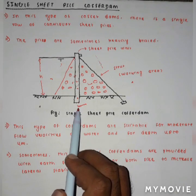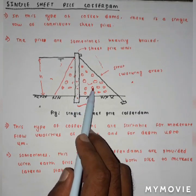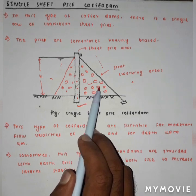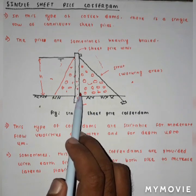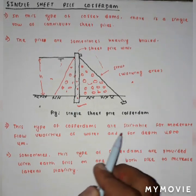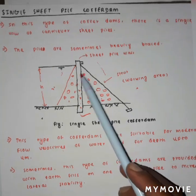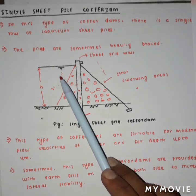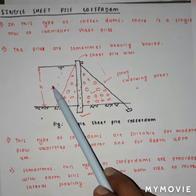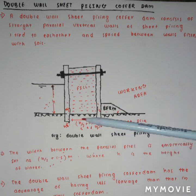In the single sheet pile cofferdam, a single row of sheet piles is driven, and to support the sheet piles a filling material is used either on one side or on both sides. The filling material used should have high unit weight and coefficient of friction to provide support to the single row of sheet piles. This type is preferred when the flow velocity of water is moderate and the depth of the water body is up to four meters. The height of the sheet pile is greater than the maximum water level to prevent flow into the working area when waves arise.